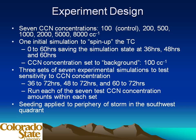The experiment used 7 CCN concentration amounts ranging from 100 to 8,000 per cc. One initial simulation spun up the tropical cyclone before introducing seeding, run from 0 to 60 hours, with states saved at 36, 48, and 60 hours to use as starting points for the seeding process. During this initial simulation, CCN concentration is set to a clean background value of 100 per cc. Three sets were then run with each of the seven CCN levels: from 36 to 72 hours, 48 to 72 hours, and 60 to 72 hours. Seeding was applied to the entire southwest quadrant of the storm — a really large seeding area.